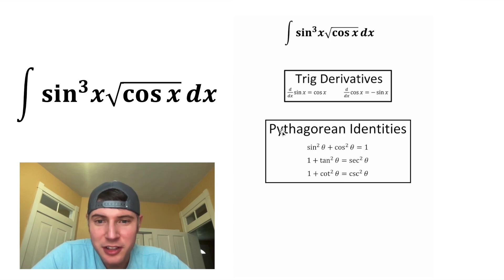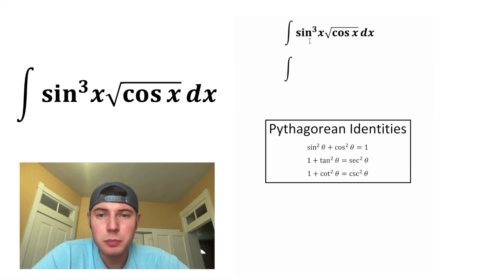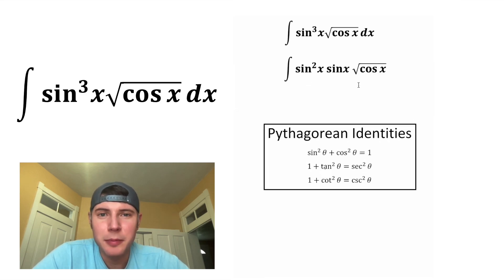First, we have a sine cubed right here. There is no sine cubed in the Pythagorean identities, so I want to split this sine cubed into a sine squared times sine, and then let's copy down everything else.